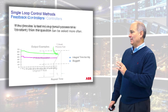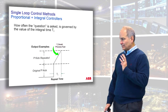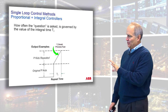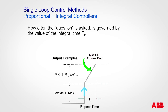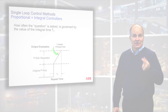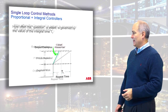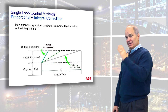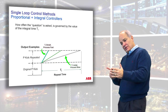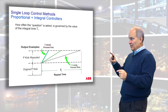Here you can see the original kick with a very short reset time - the output just takes off, which only works if you have a very snappy process with a small time constant. As the time gets bigger you can see the slope changes. By increasing the integral time, it takes longer - that has to happen when you have a slow process.